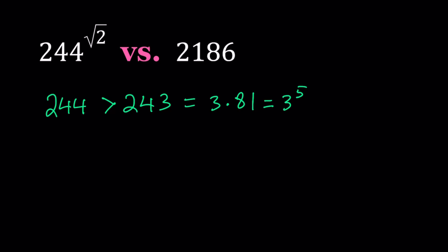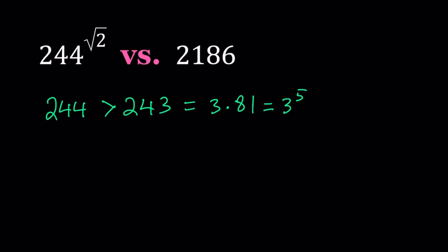This gives us something nice because now we can raise both sides to the power square root of 2. Even though square root of 2 is irrational, we can still do this. And we can write this as 244 to the power square root of 2 is greater than 3 to the power 5 to the power square root of 2. As you know, if you raise an exponential to another power, then you just multiply the exponents. It's one of the rules for exponentials, which is super-duper important.